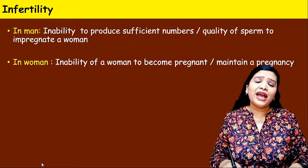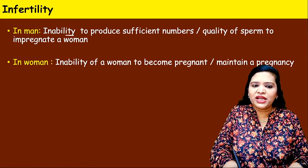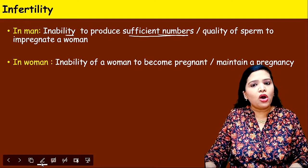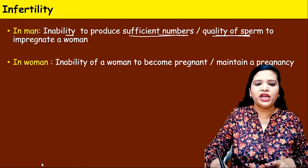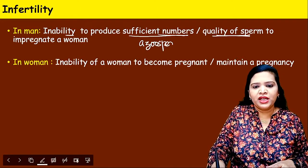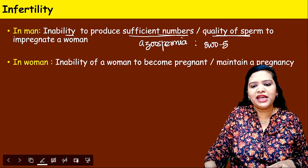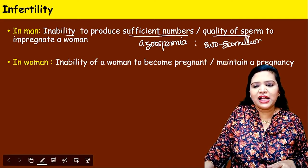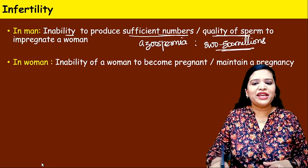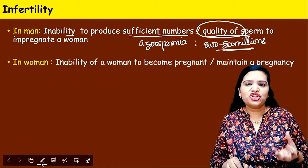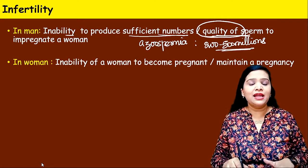In male infertility, the man has the inability to produce sufficient number of sperms or quality sperms. Either the man cannot produce enough sperms — this is called azospermia — with the normal count being about 200 to 500 million sperms. Or sperms may be present but are not of good quality — the structure, shape, or movement may not be good. These are the basic reasons in male infertility.